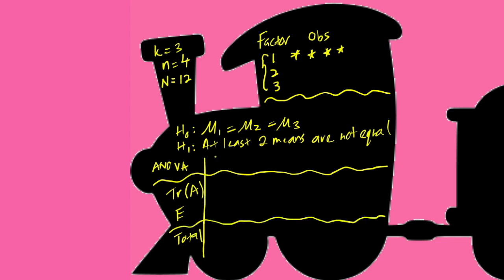So, to calculate the sum of squares of the total, we take the sum of squares of each data point. So, in this case would be this value square plus this value square up to the last value